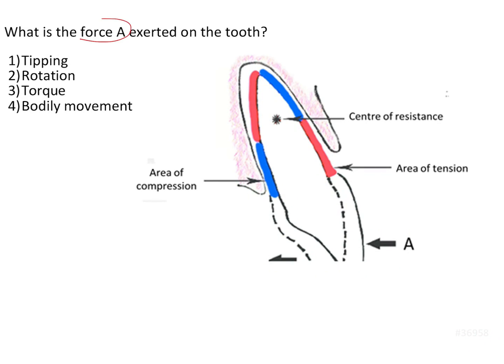What is the force A that is being exerted on the tooth? Here in this image we can see that force A is being applied onto the buccal surfaces of the crown of this tooth. We have been asked to identify the type of tooth movement that will be expected with this type of force.